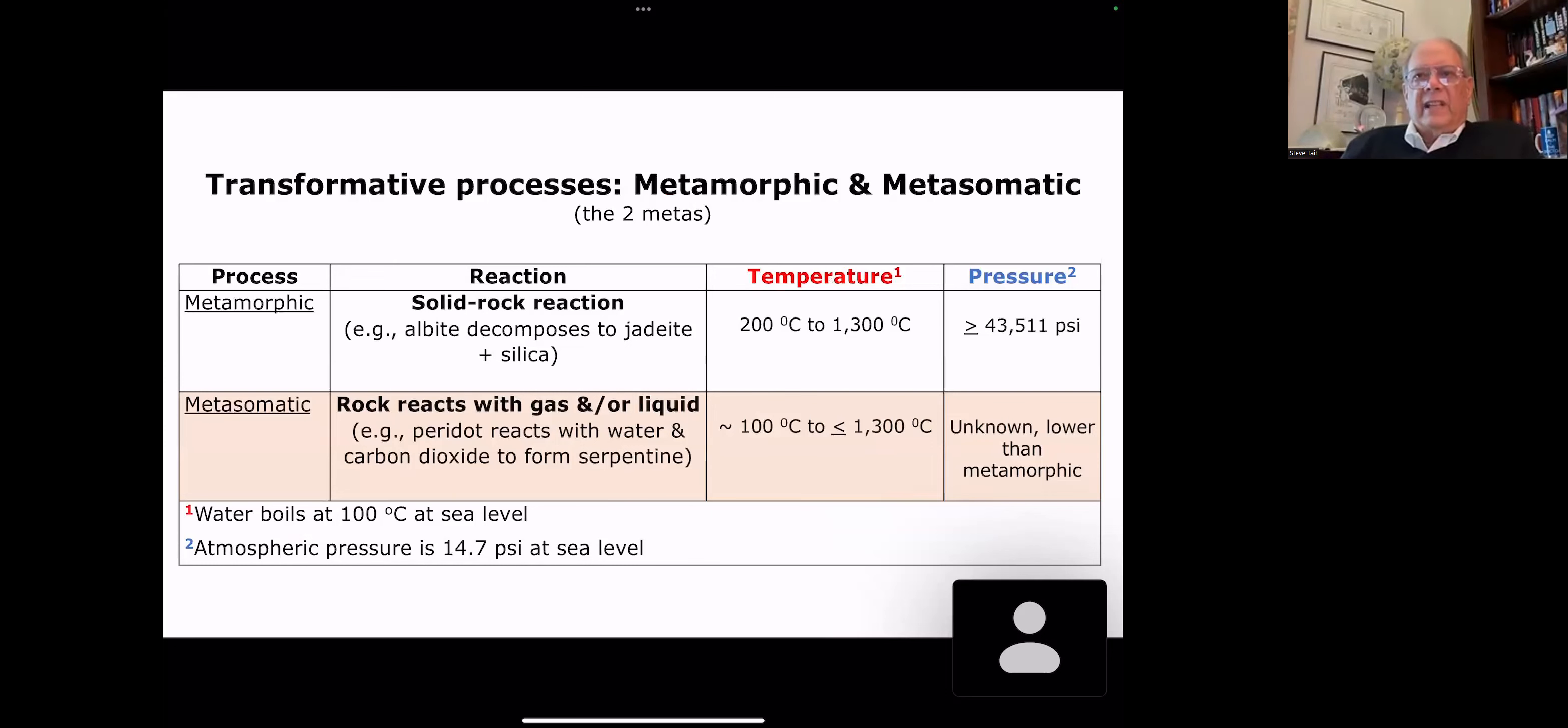There's actually two transformative processes that occur because of pressure and temperature. One is metamorphic, and the other is metasomatic. Metamorphic is the most people have heard this term. Up until a few decades ago, every transformation of stone was metamorphic, but more recently we're talking about another process called metasomatic. Metamorphic is a solid rock reaction. For example, albite can decompose to form jade and silica. Metasomatic is rock reacting with gas and or liquid.